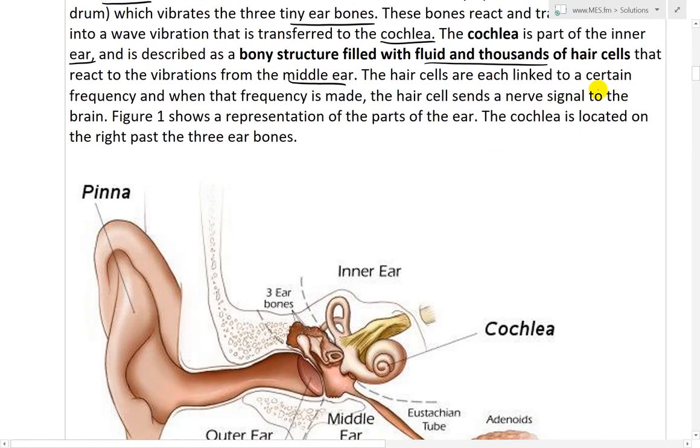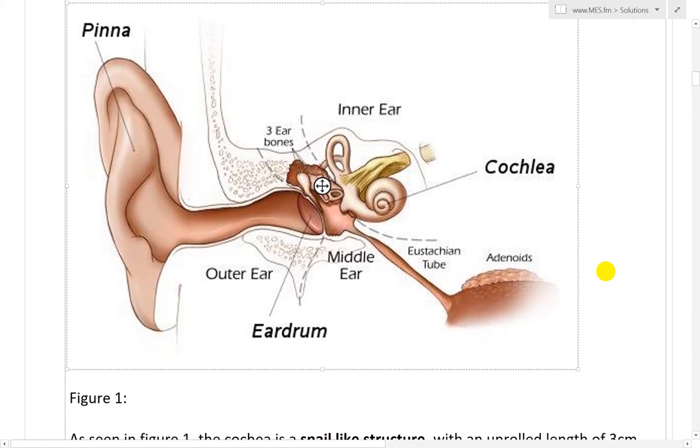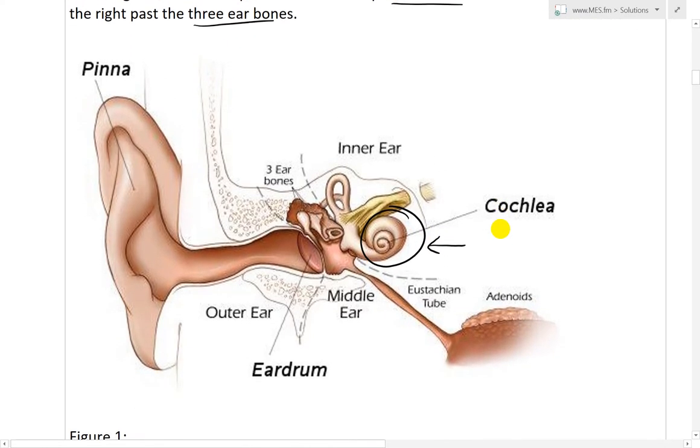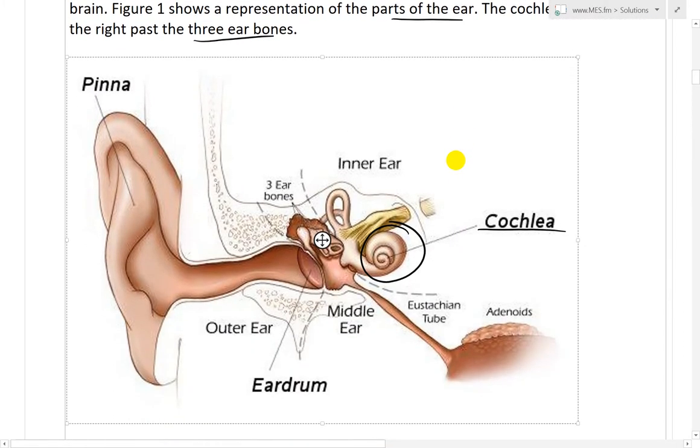And the Cochlea is part of the inner ear and is described as a bony structure filled with fluid and thousands of hair cells that react to the vibrations from the middle ear. The hair cells are each linked to a certain frequency and when that frequency is made the hair cell sends a nerve signal to the brain. And figure one shows a representation of the parts of the ear. The Cochlea is located on the right, past the three ear bones.